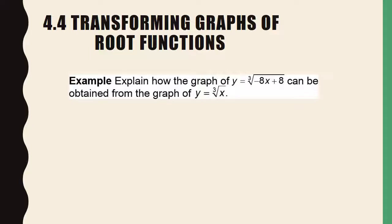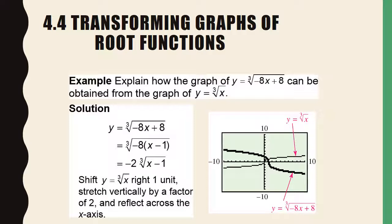It's a very similar problem — just think about what we did on the last one. We're going to factor out the negative 8. The cube root of negative 8 is negative 2, so that lets us pull that out front. We've got three things going on: we're shifting the graph right one unit, we are stretching it vertically by a factor of 2, and we are reflecting it across the x-axis.